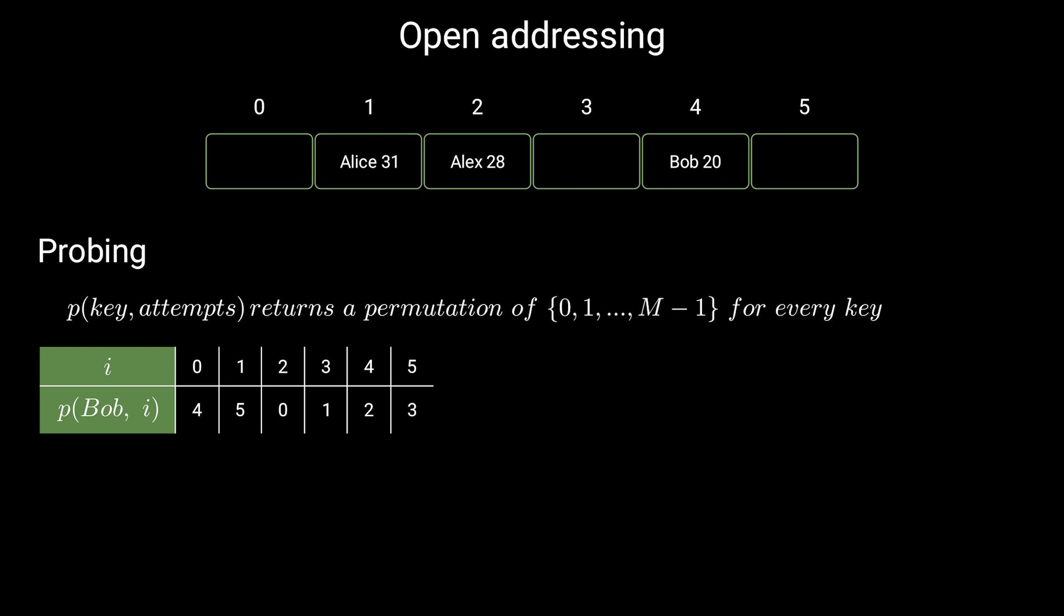This property guarantees that the probing will eventually return an index to an empty slot, assuming that the hash map is not full. In mathematical terms, we require that the sequence returned by the probing function for a fixed key is a permutation of 0 to m-1, where m is the number of slots.